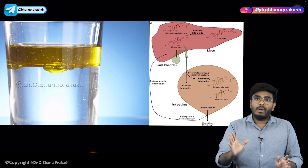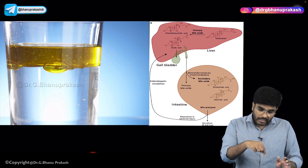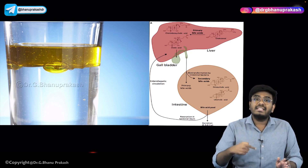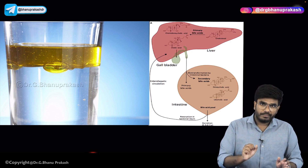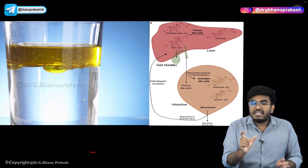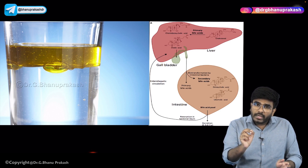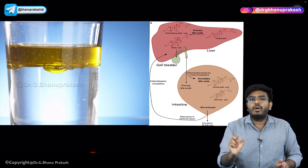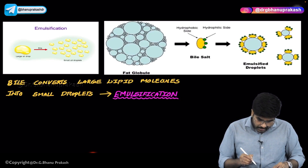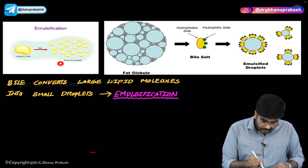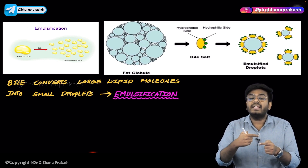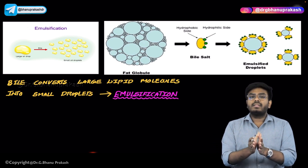What our bile is going to do? Bile acts just like soap. Whenever you put a little detergent or soap into a glass of water with oil, water and oil are going to mix. This process is called emulsification. The bile coming from the gallbladder does emulsification — the large lipid droplets which are not mixing with water are chopped down into small lipid droplets, which can then easily mix with the lipases. So during emulsification, a large lipid droplet is converted into small droplets with the help of bile, allowing the lipases to easily act on them and digest the lipids.